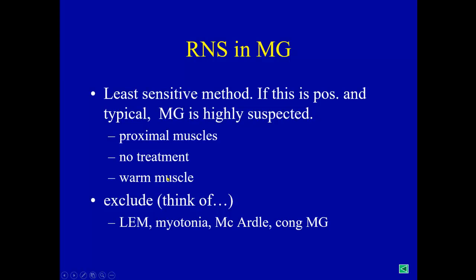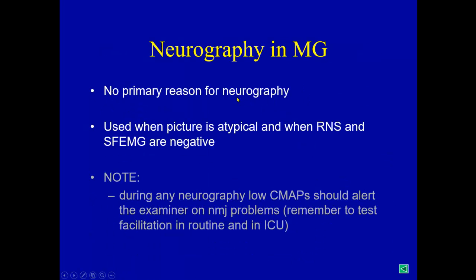There are other situations where we see a decrementing response: Lambert-Eaton, myasthenia, myotonia, and also in reinnervation conditions such as ALS or post-traumatic nerve lesion. In myasthenia, we do not need to do conventional routine EMG unless the symptoms are atypical; what we can see is variable amplitudes of motor unit potentials but otherwise nothing special. If we find a low CMAP in routine neurography, that should alert the examiner to a neuromuscular problem — particularly Lambert-Eaton myasthenia — and we must make a facilitation test to determine whether the neuromuscular junction is normal.